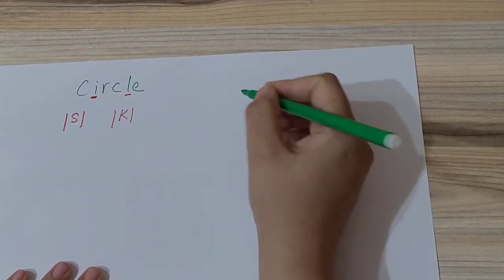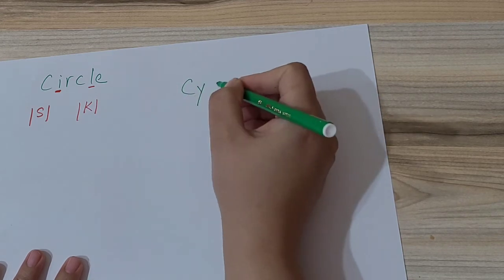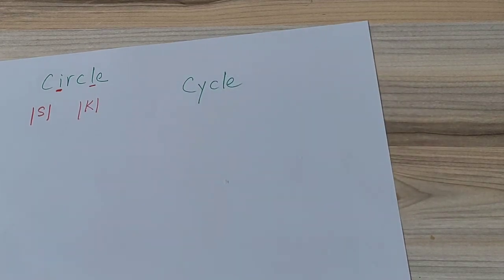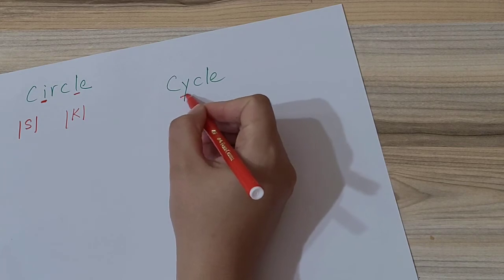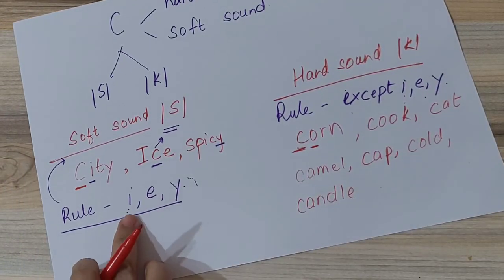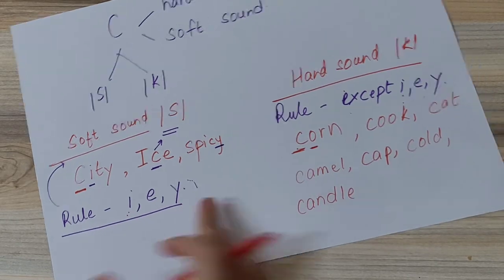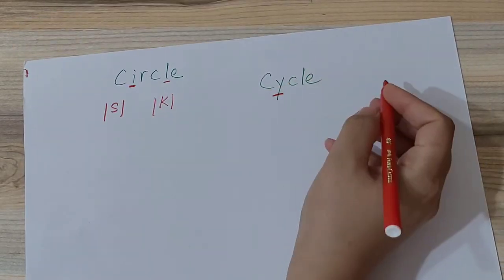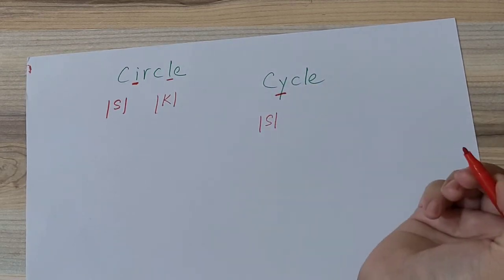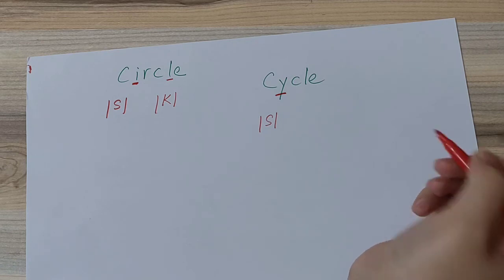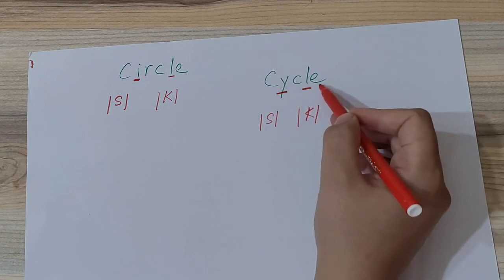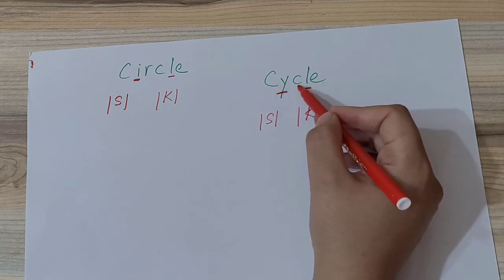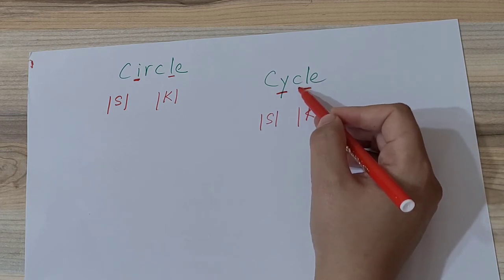One more word: Cycle. In cycle also you can see C ke baad, first letter C ke baad, Y is coming. As per our rule, if C is followed by I, E, Y, then we pronounce C's soft sound. So for the first C, we pronounced the soft sound of letter C, that is 'sa'. And the second C has L coming after it, so here we pronounced C's hard sound, that is 'ka'. So this is 'sa-i-ka-ul', where we pronounced C's soft sound here and C's hard sound here.